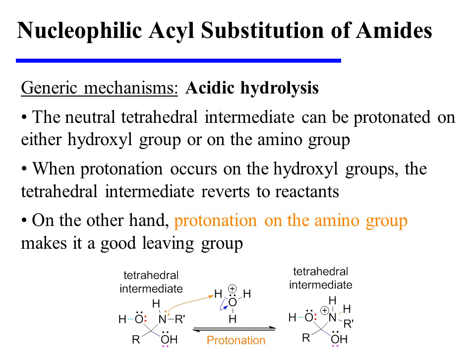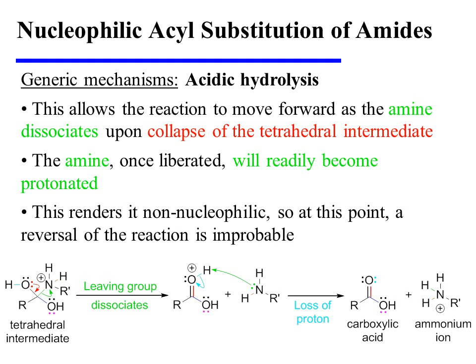This new species can be protonated on either hydroxyl group or on the amino group. When protonation occurs on the hydroxyl groups, the tetrahedral intermediate reverts to reactants. On the other hand, protonation on the amino group makes it a good leaving group, thereby allowing the reaction to move forward. Upon collapse of the tetrahedral intermediate so as to reform the carbonyl, the amine dissociates. And the amine, once liberated, will readily become protonated as it removes a proton from the carbonyl oxygen. This renders the amine non-nucleophilic, so at this point a reversal of the reaction is improbable.